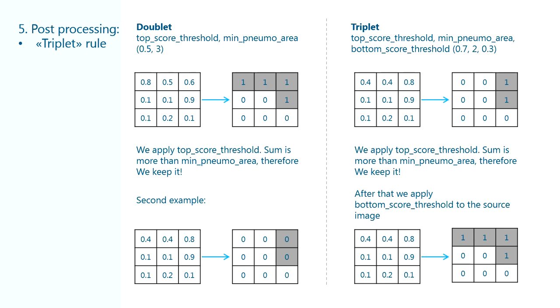Let's look again at the second example. First, we apply top score threshold. Sum is more than min pneumothorax area, therefore we classify image as having pneumothorax. After that, we apply relaxed bottom score threshold to make a final prediction.